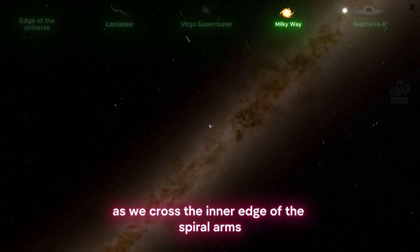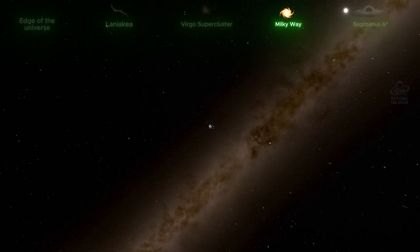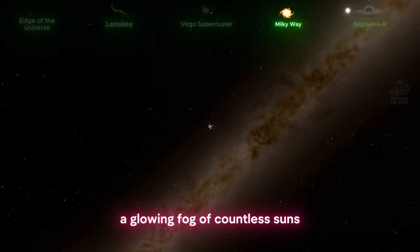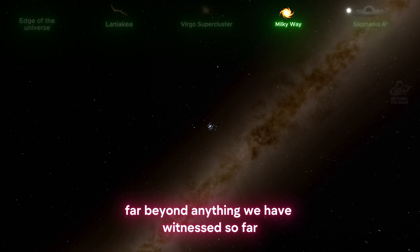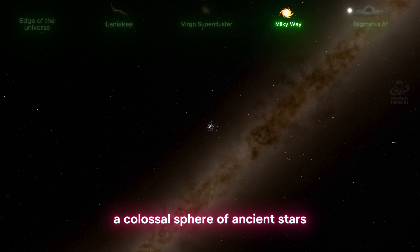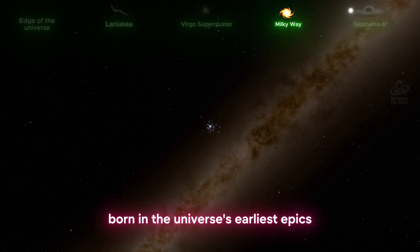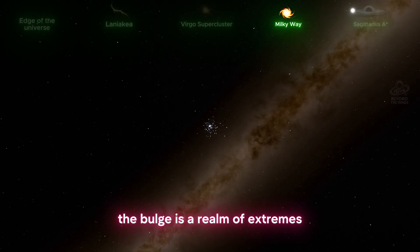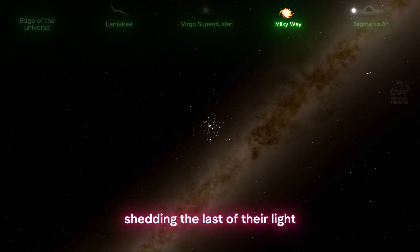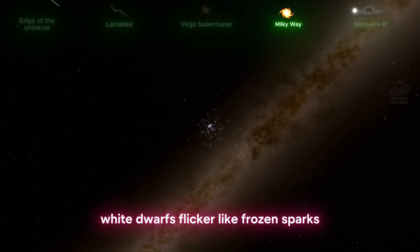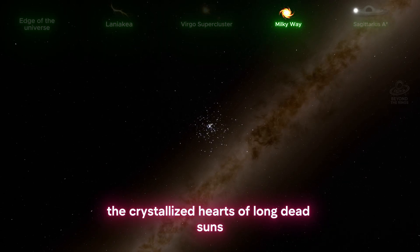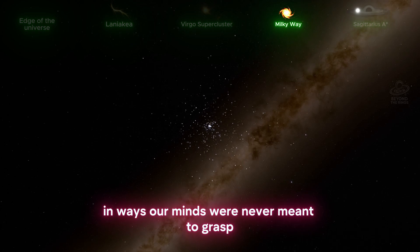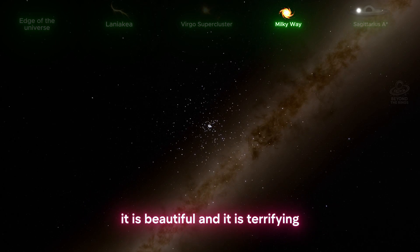As we cross the inner edge of the spiral arms, the light ahead becomes overwhelming. Stars no longer appear as single points, they merge into a golden haze, a glowing fog of countless suns compressed into a density far beyond anything we have witnessed so far. This is the galactic bulge, a colossal sphere of ancient stars born in the universe's earliest epochs, still burning with the memory of creation itself. The bulge is a realm of extremes. Red giants drift like dying lanterns, shedding the last of their light into the surrounding clouds. White dwarfs flicker like frozen sparks, the crystallized hearts of long dead suns. And through it all, gravitational tides twist and stretch space in ways our minds were never meant to grasp.